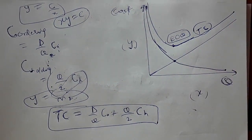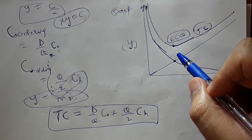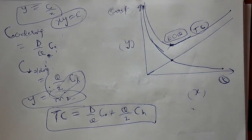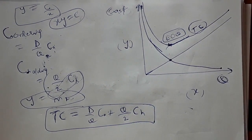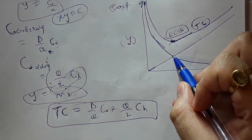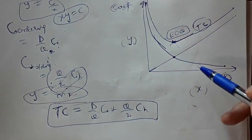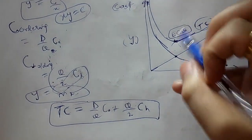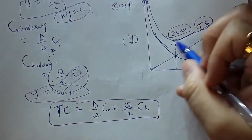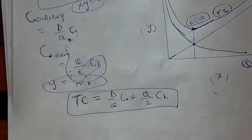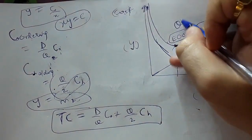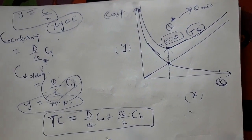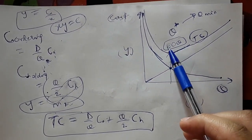EOQ is called 'economic' because it corresponds to the minimum total cost — it is literally economic for us. This quantity is denoted Q*. It is the minimum quantity that needs to be ordered so as to have the minimum total cost. I will also prove shortly that the intersection point of the ordering and holding cost curves lies on the same vertical line as the EOQ point.